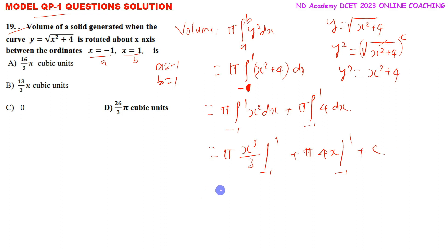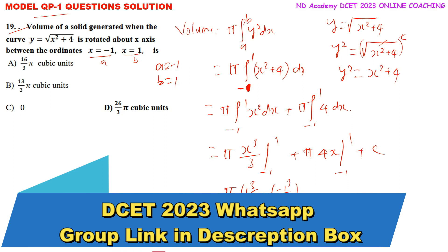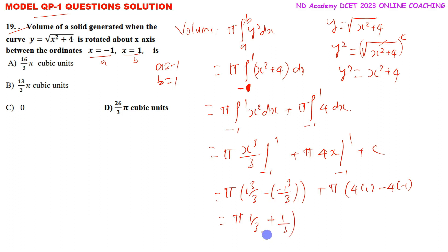Applying upper limit minus lower limit: pi times (1 cubed by 3 minus minus 1 cubed by 3) plus pi times (4 times 1 minus 4 times minus 1). So pi times (1 by 3 plus 1 by 3) plus pi times (4 plus 4), which gives pi times 2 by 3 plus pi times 8.